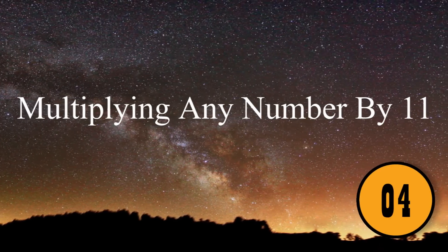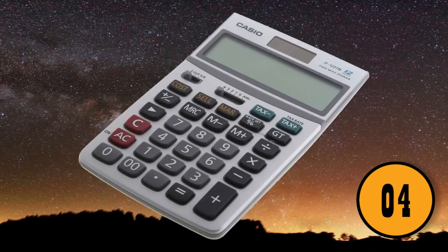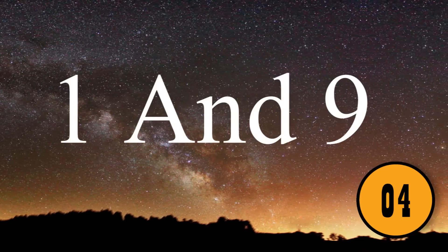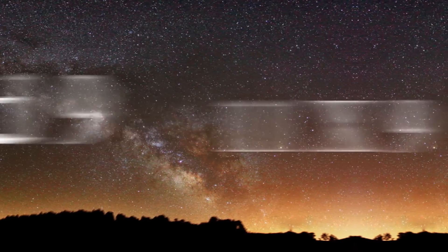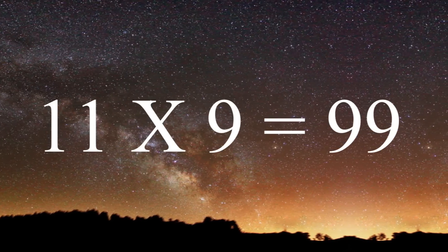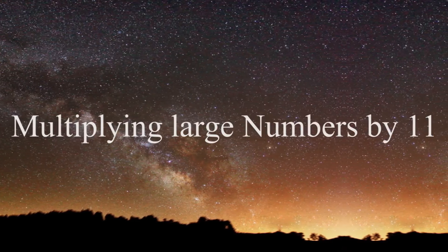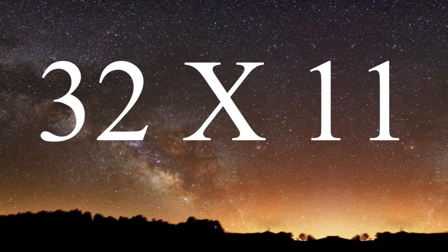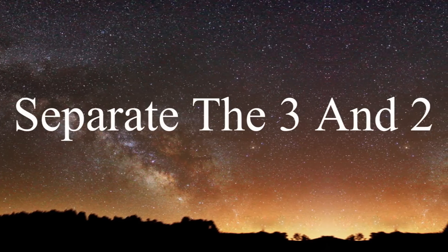4. Multiplying any number by 11. You don't need a calculator to multiply a number by 11. If the number is between 1 and 9, just add the same number to it. 11 times 9 is 99. If you're multiplying large numbers by 11, it's just as simple. If you're multiplying 32 times 11, separate the 3 and the 2.